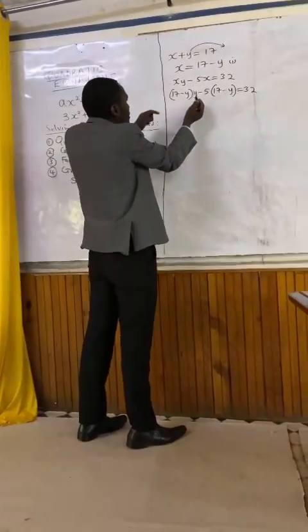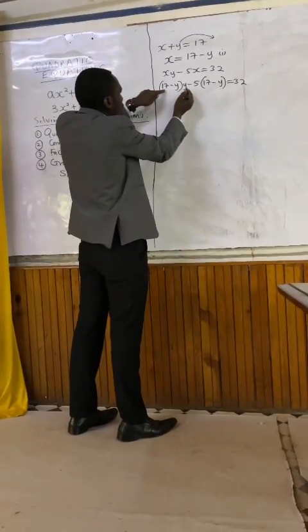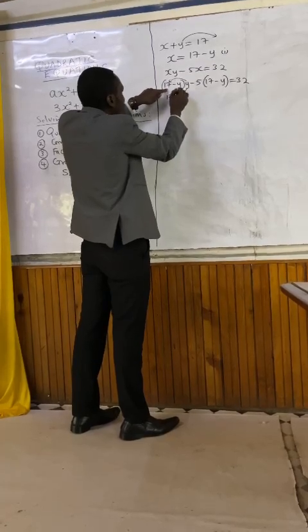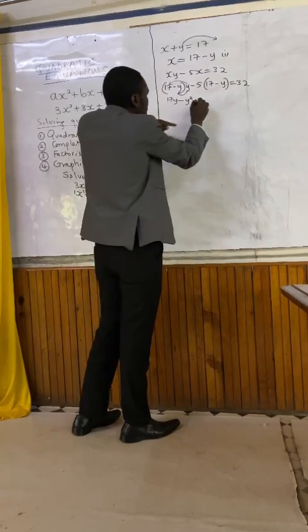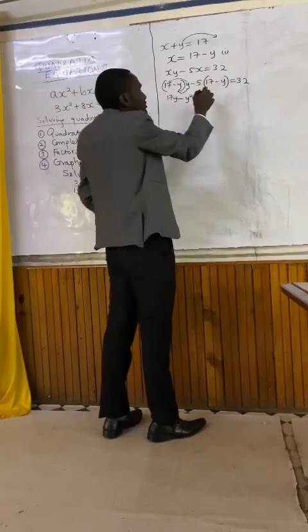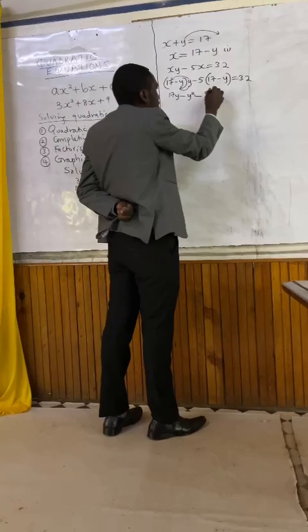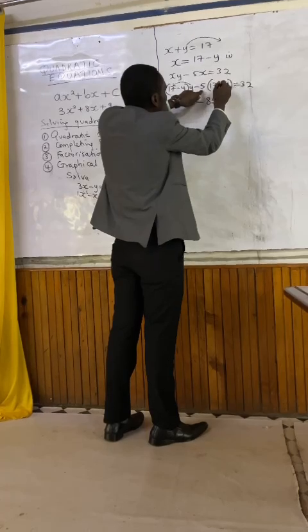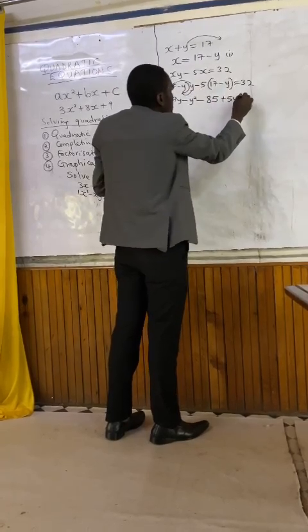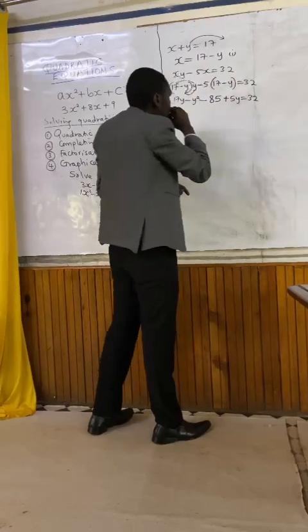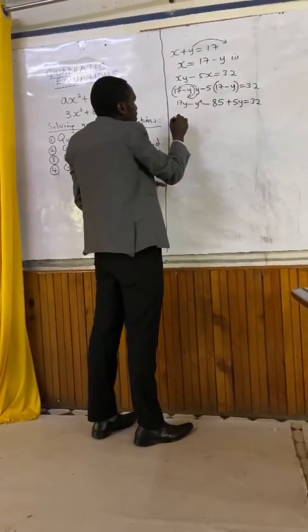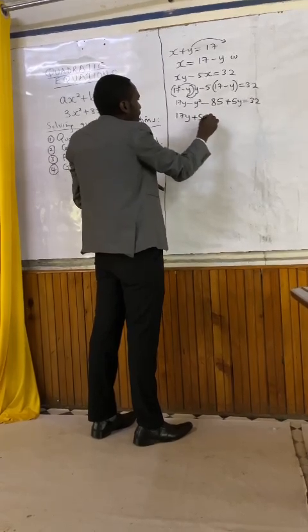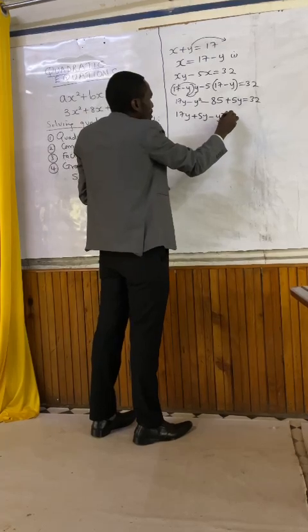We can proceed. We shall open the brackets. 17 times y is 17y. Less y times y, which is y squared. Minus 5 times 17 is 85. Then minus 5 times minus y gives plus 5y. The answer must be 32. We can collect like terms: 17y plus 5y minus y squared minus 85 equals 32.